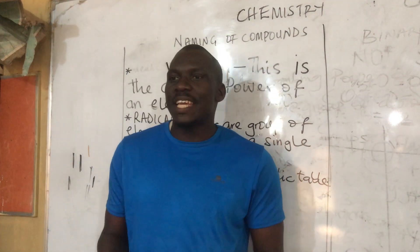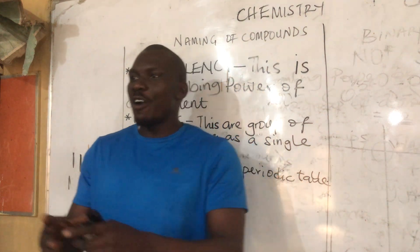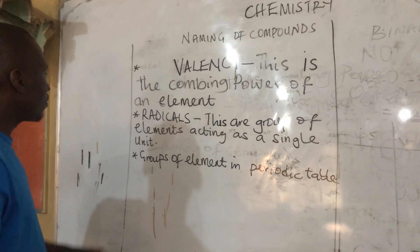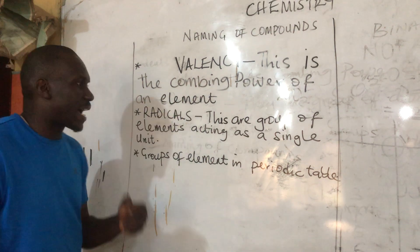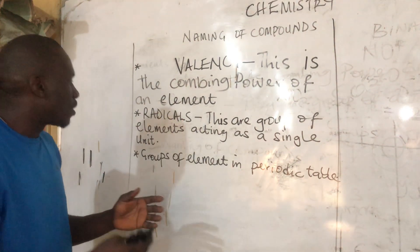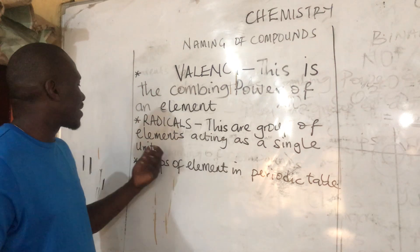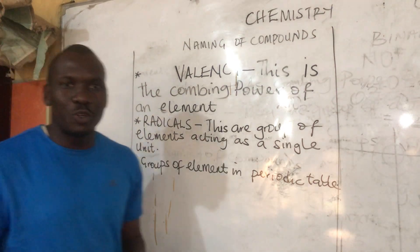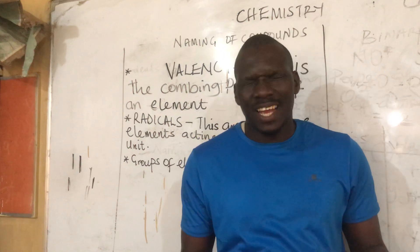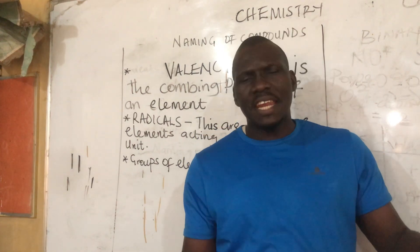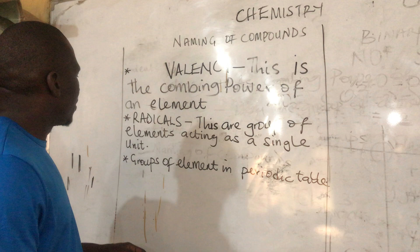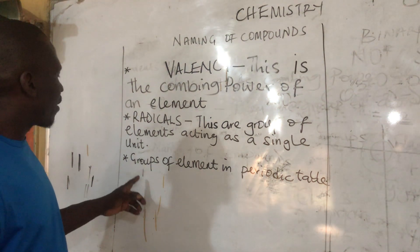Valency is used to form compounds, either a simple compound or a complex compound. Second, radicals. Radicals are groups of elements acting as a single unit. This is the combination of elements where people wonder how to name them. But after this video, you should be able to name many compounds.